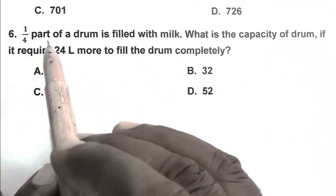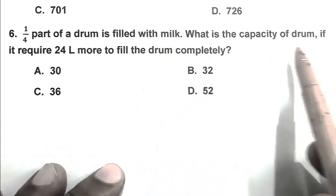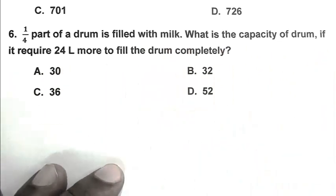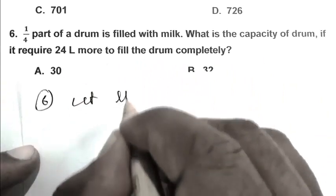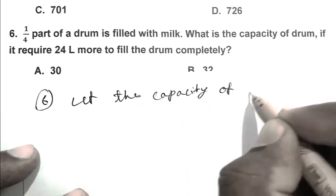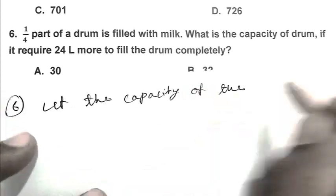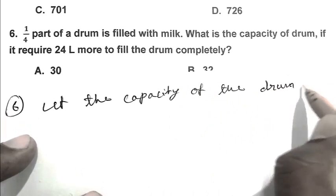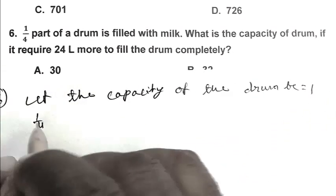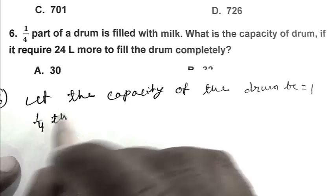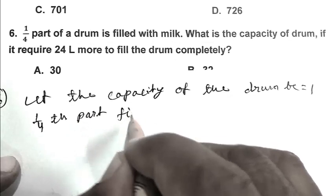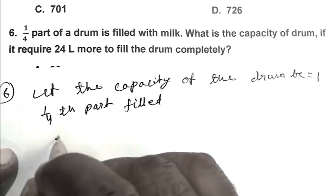Question number 6: One fourth part of a drum is filled with milk. What is the capacity of the drum if it requires 24 liters more to fill completely? Let the capacity be 1, with one fourth filled.